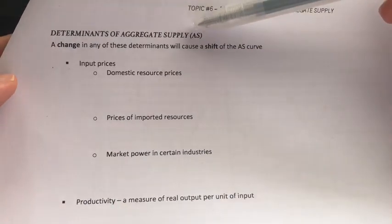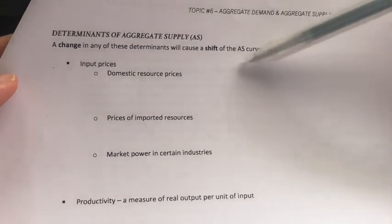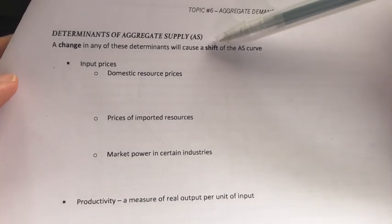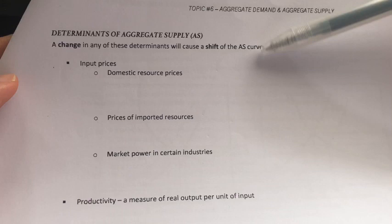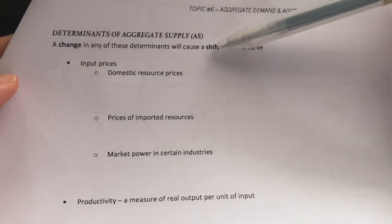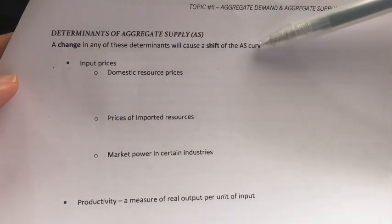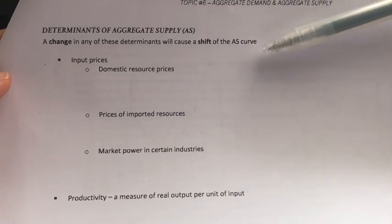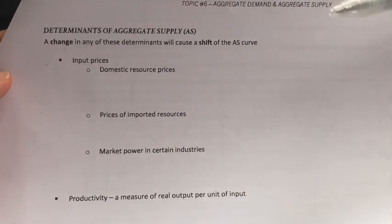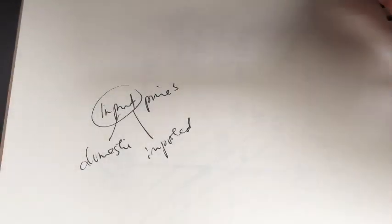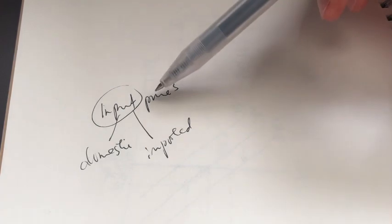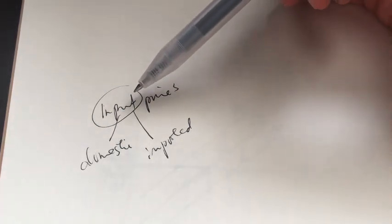Determinants of aggregate supply are basically the factors that make the aggregate supply curve shift. When the aggregate supply curve increases, it will shift to the right. If the aggregate supply curve falls or decreases, it will shift to the left. Let's take a look at the first determinant: input prices. Inputs are basically the factors of production — anything that firms use to produce goods and services.